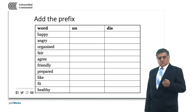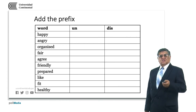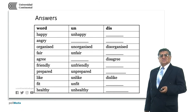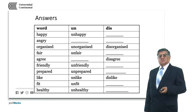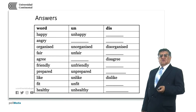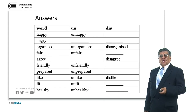Let's see the answers. Happy → unhappy. Angry has no corresponding affixed word with un- or dis-. Organize → unorganize and disorganize. Unorganized means it has not been organized; disorganized means the organization exists but is not correct. Fair → unfair. Agree → disagree. Friendly → unfriendly. Prepare → unprepared. Like → unlike and dislike. Unlike means 'different'; dislike means 'not to like.' Fit → unfit only. Healthy → unhealthy.